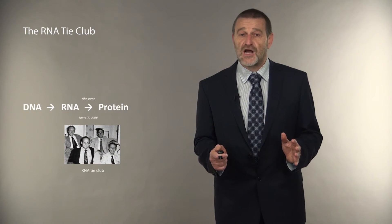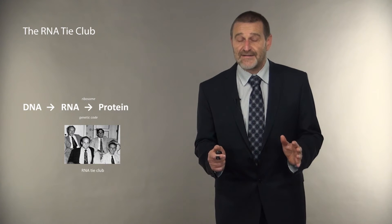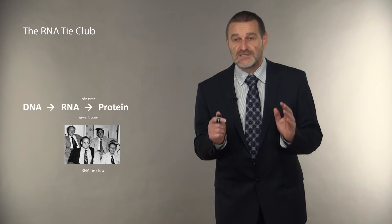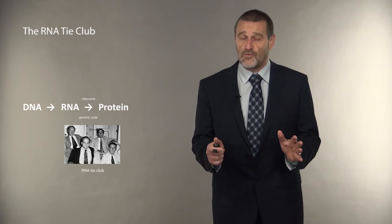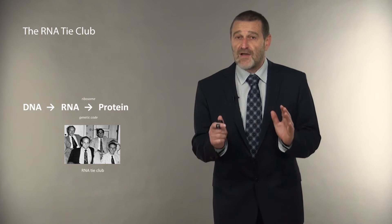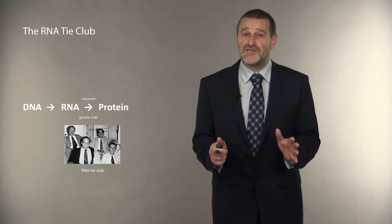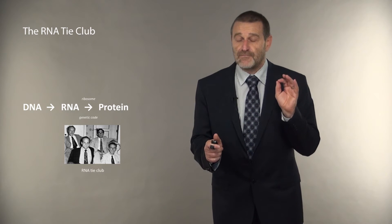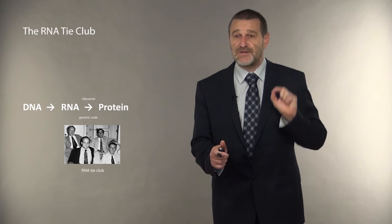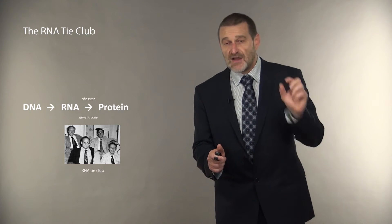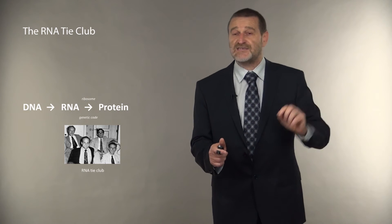James Watson and George Gamow formed the RNA Tie Club. The goal of this club was to decode the genetic code. There were 20 members in the club, one for each amino acid. And the mission was to figure out which codons caught this particular amino acid.